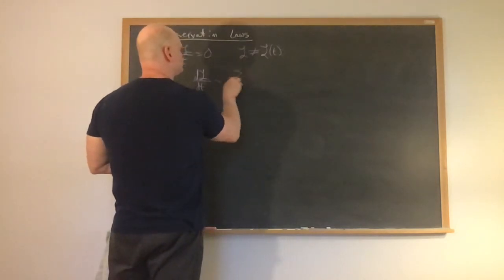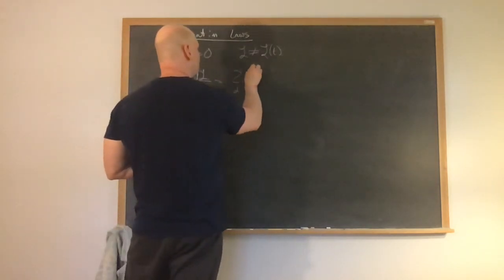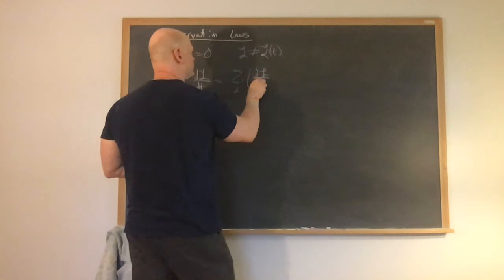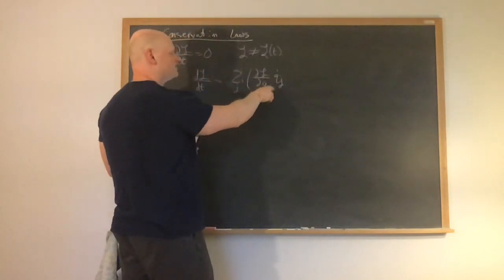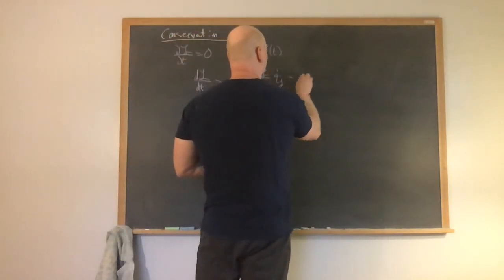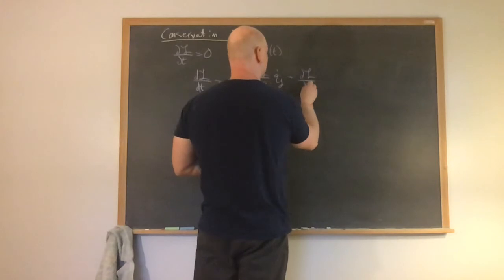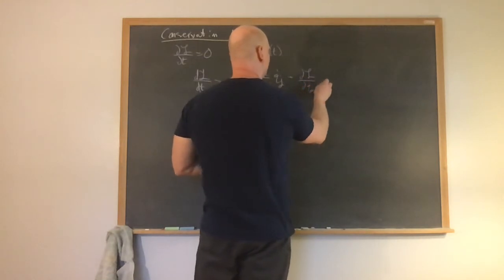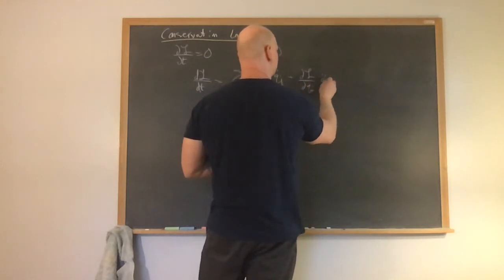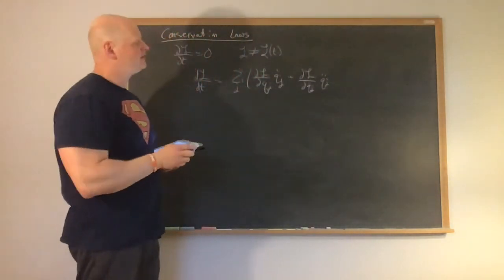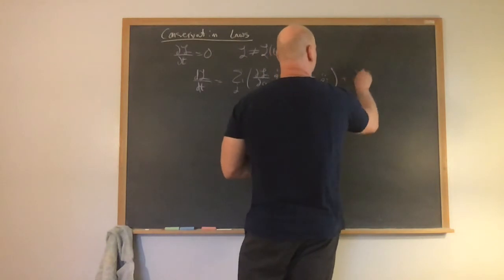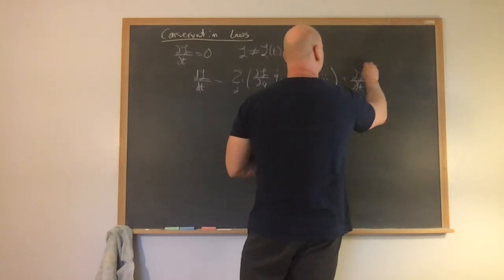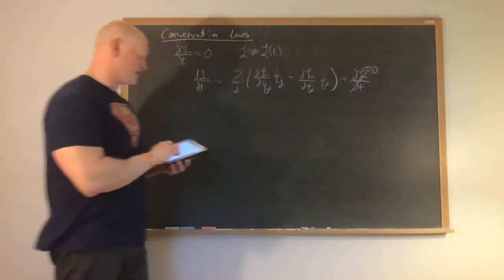This is going to be equal to the sum over j of the partial derivative of the Lagrangian with respect to q_j, times q-dot_j—so that's the derivative of q with respect to time—plus the partial of the Lagrangian with respect to q-dot_j, times q-double-dot_j—so that's the derivative of q-dot with respect to time—plus the partial of the Lagrangian with respect to time. But we're assuming that last term is equal to zero, so it goes away.